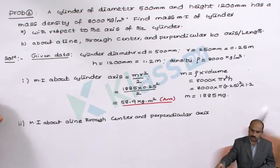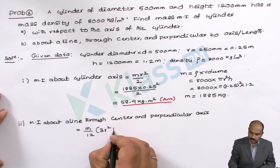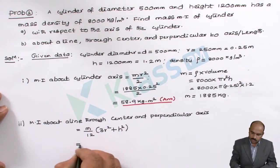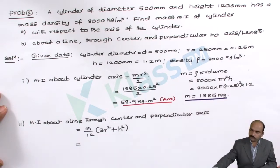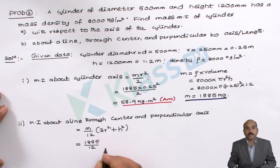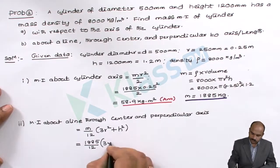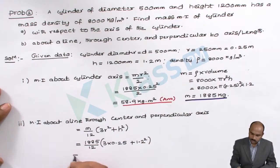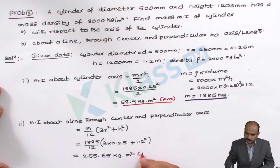Using the formula I = M/12 × (3R² + H²), we substitute the known values: mass = 1885, divided by 12, multiplied by 3 × (0.25)² plus (1.2)². The answer is 255.65 kg·m². This is the answer for the second bit.